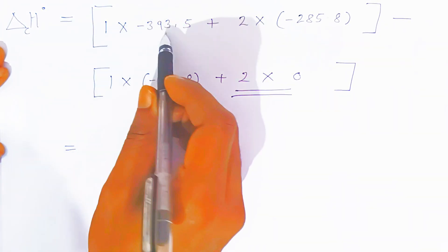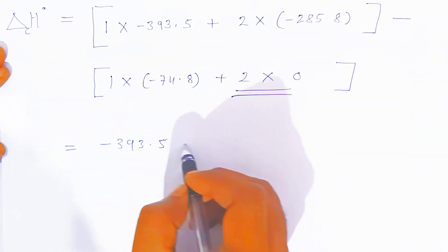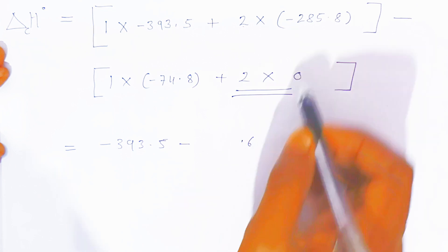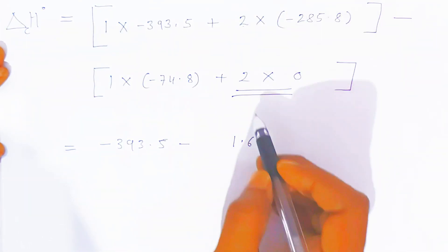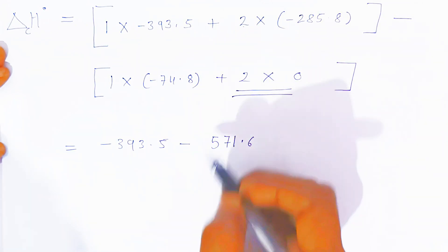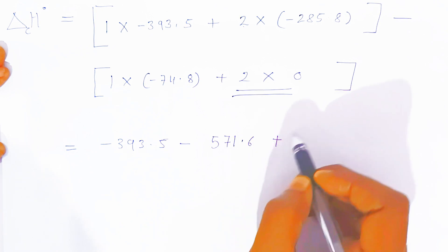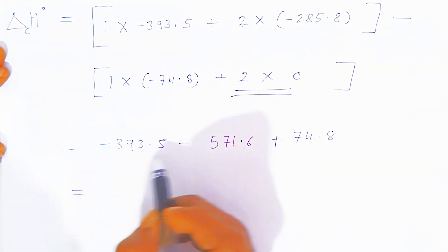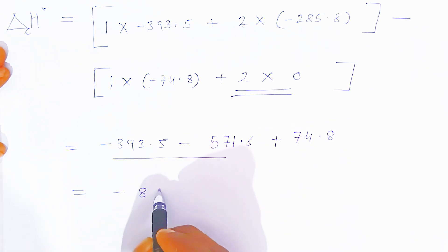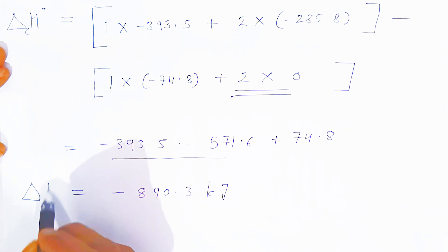Adding the product enthalpies: −393.5 + (−571.6) = −965.1. Then subtracting the reactant: −965.1 + 74.8 = −890.3 kJ/mol. So the standard enthalpy of combustion of methane is minus 890.3 kilojoules per mole.